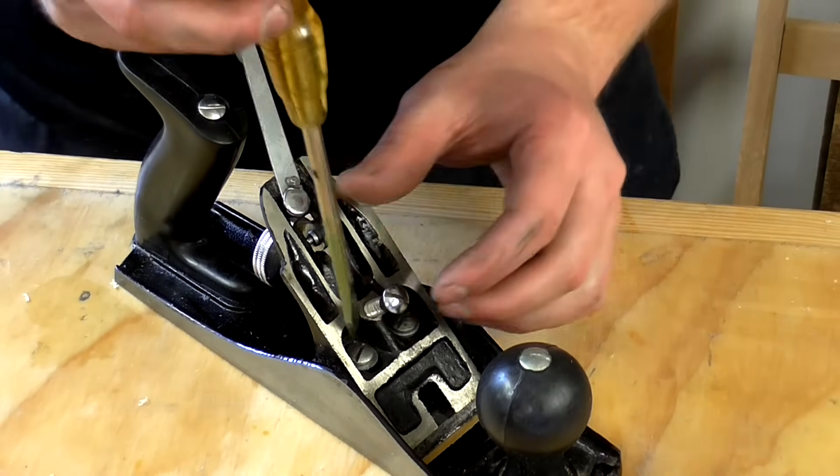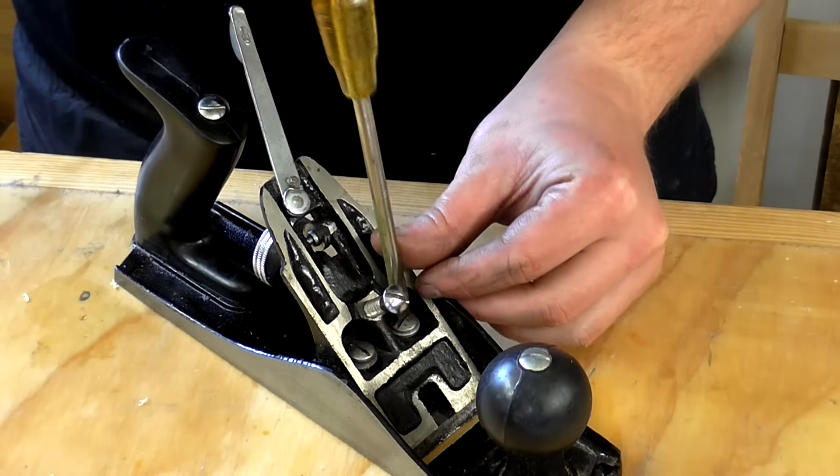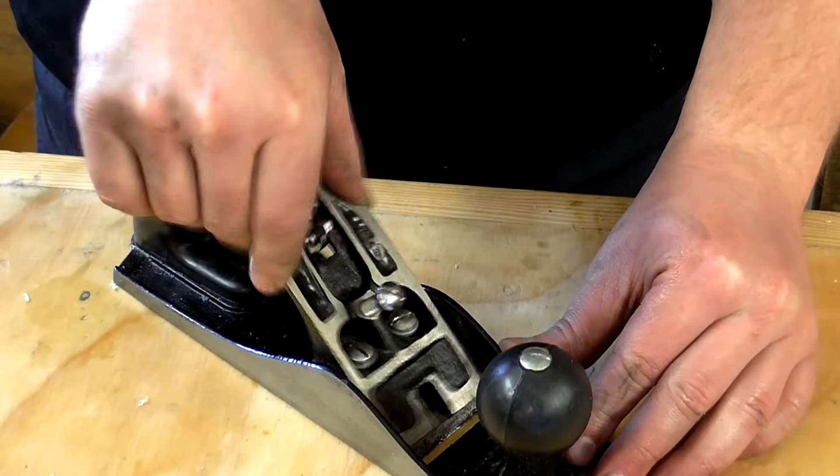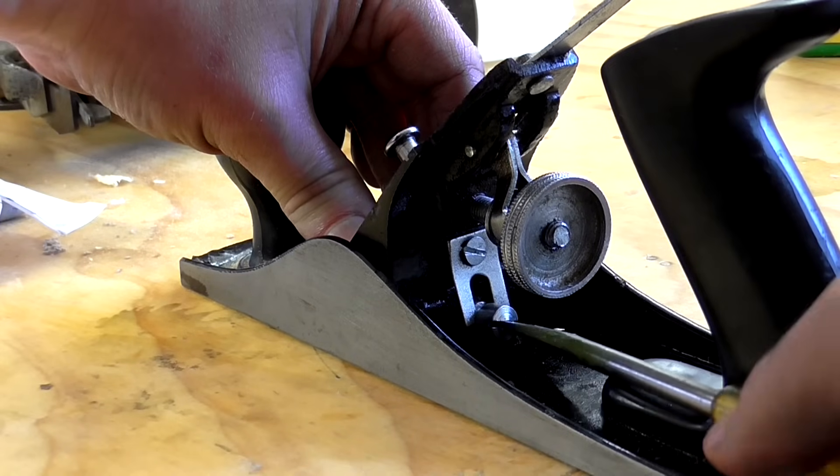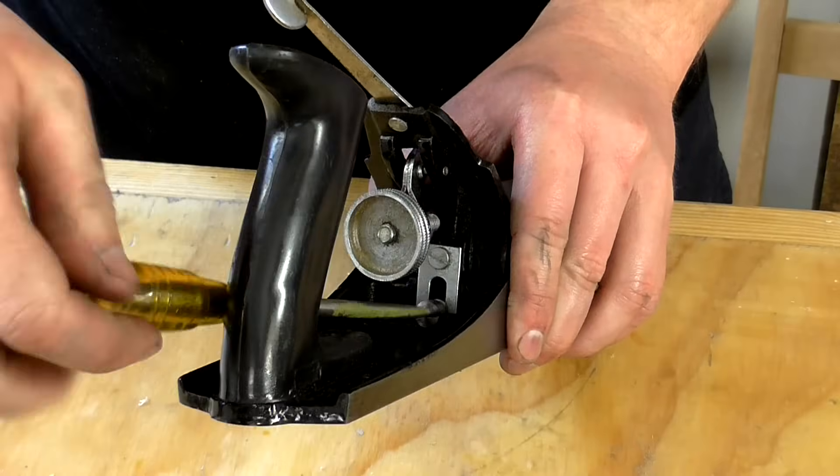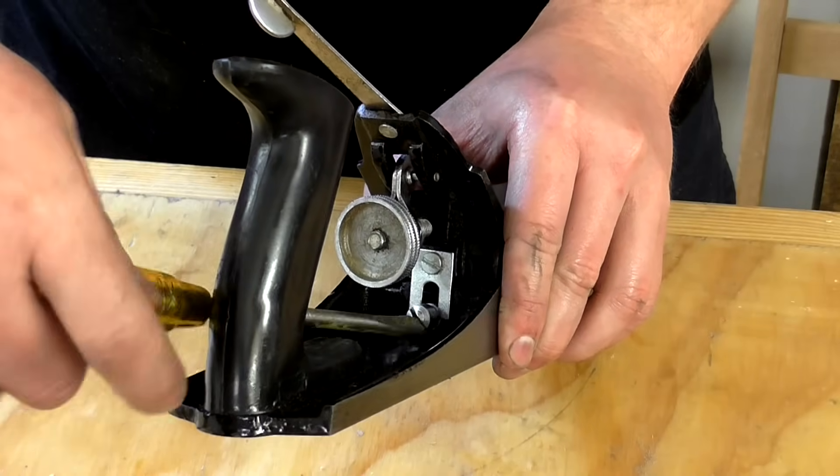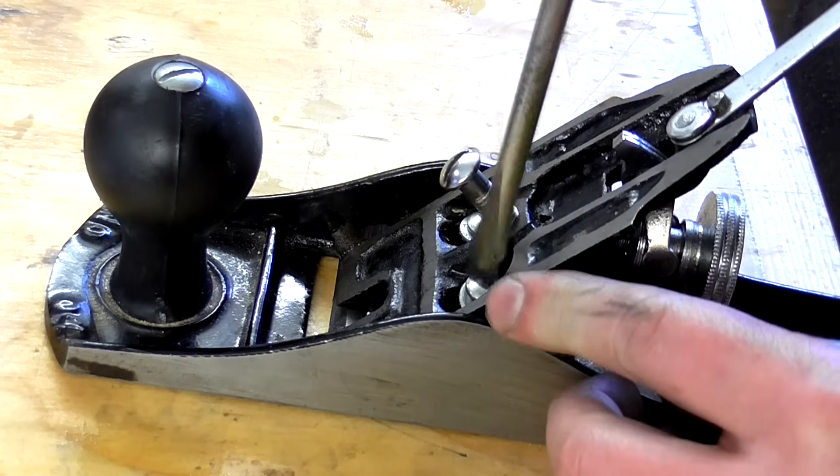There are a couple of screws securing the frog to the base of the plane. Loosen those screws and on the back you'll see an adjustment screw at the bottom. This can be turned clockwise to advance the frog, or counterclockwise to back it off and make the mouth opening wider. Then you can secure the frog to the base again with the screws.